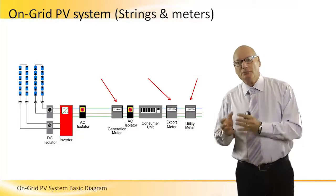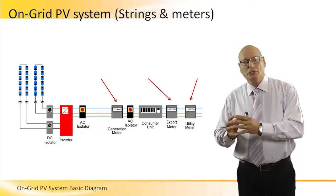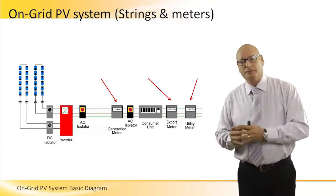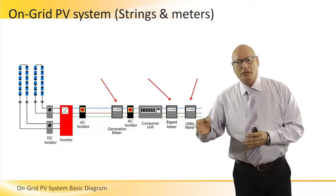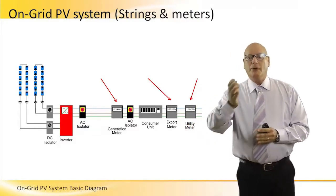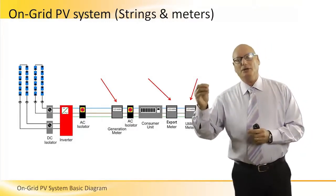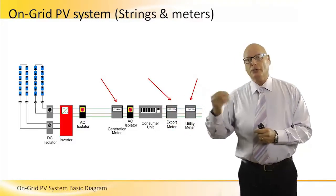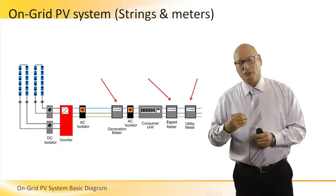The export meter is what we produce and send to the grid. B minus A equals C. The export meter minus the generation meter is exactly what is being exported to the grid, for which I get money back from the utility company based on the feed-in tariff.